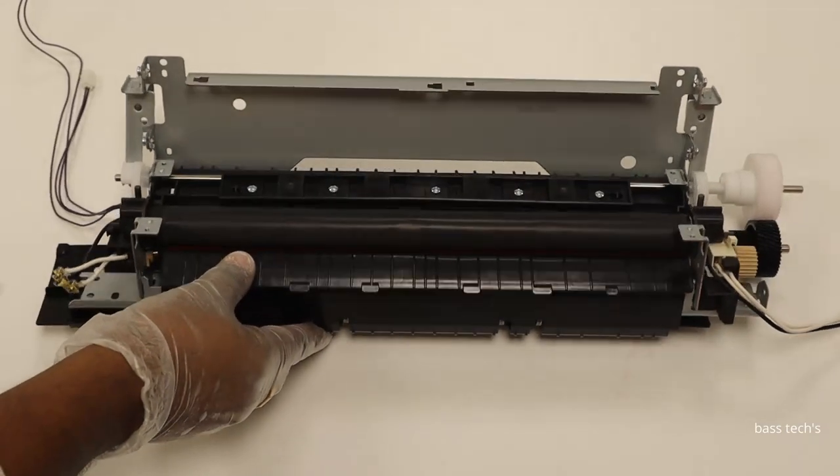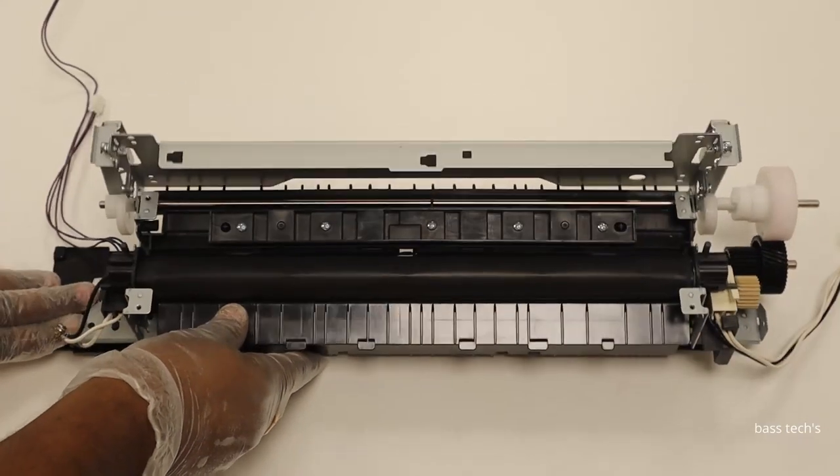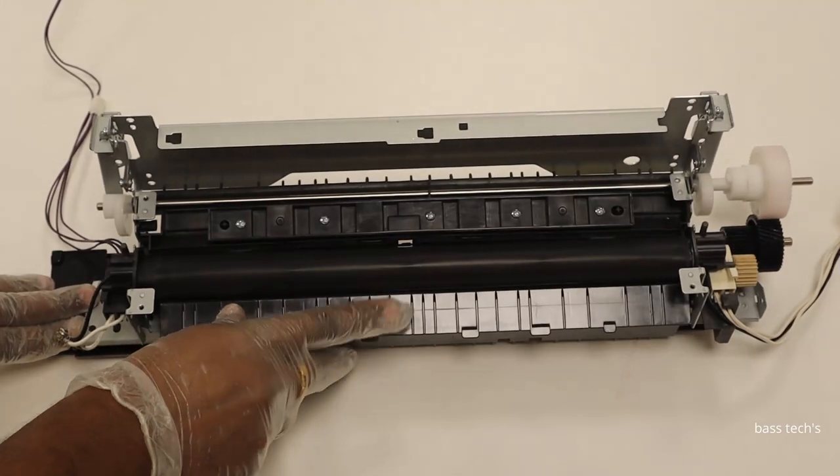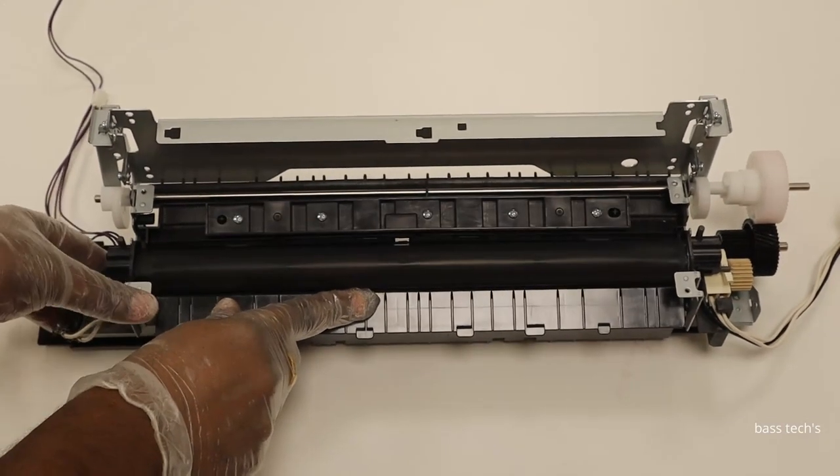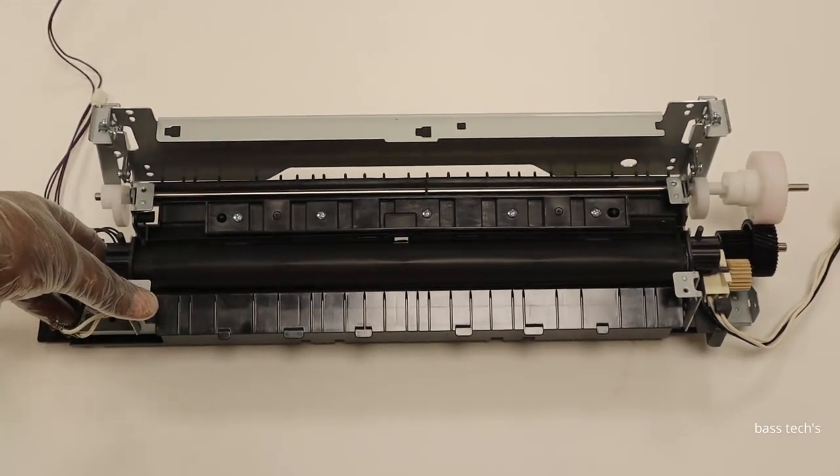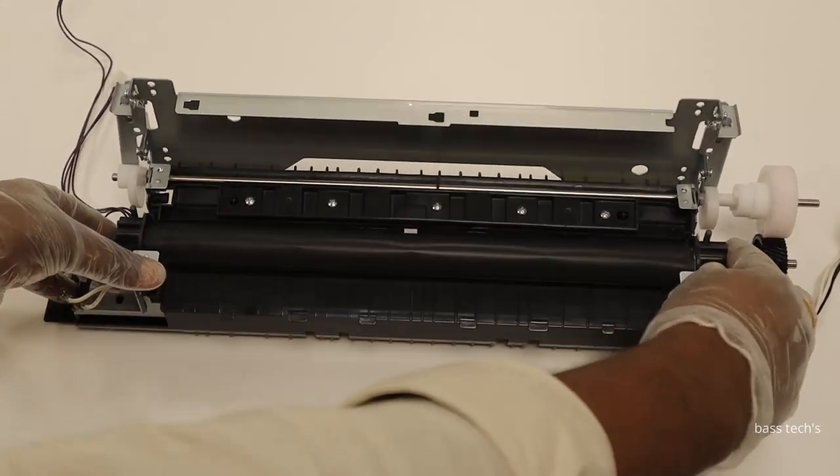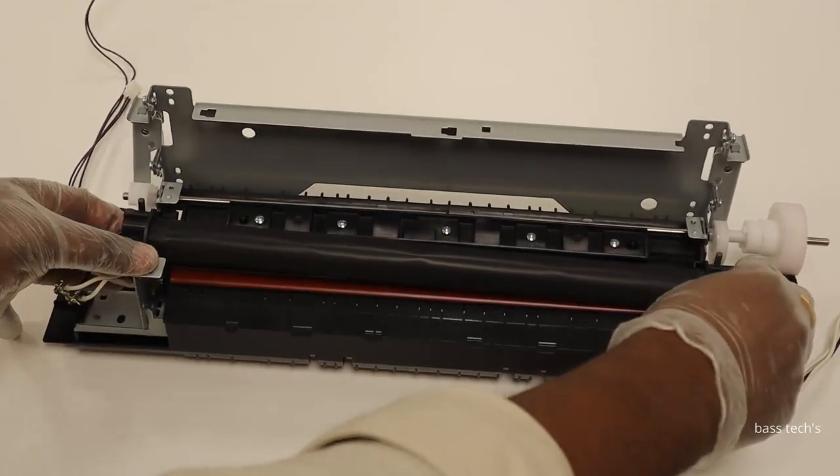Now let's see how to access the fixing film assembly, because our intention is to change the fixing film assembly as a unit. Once you open the cover, it is easily available.